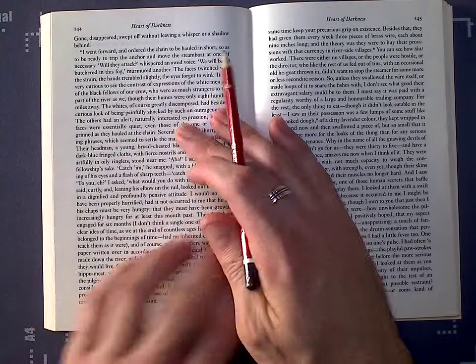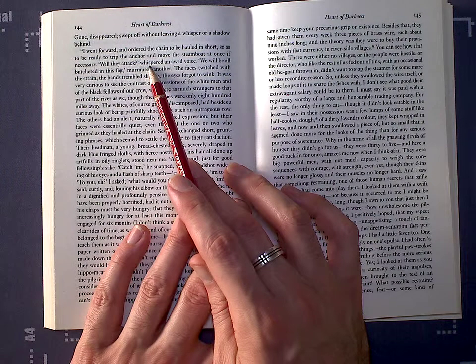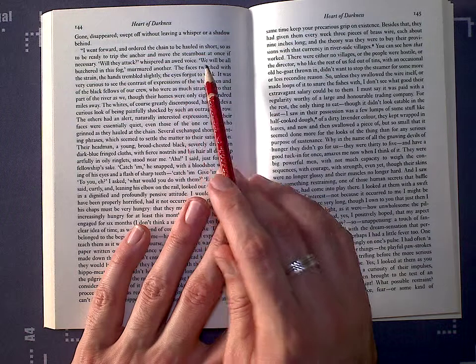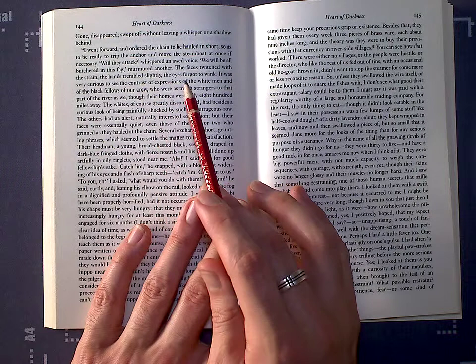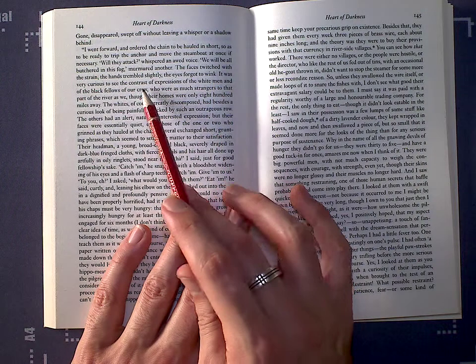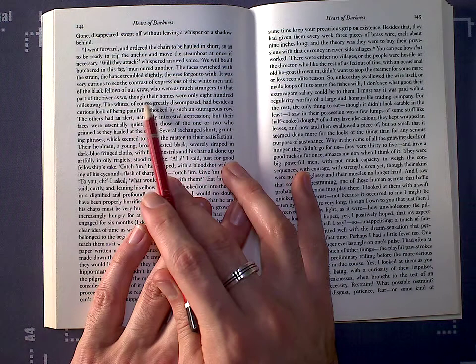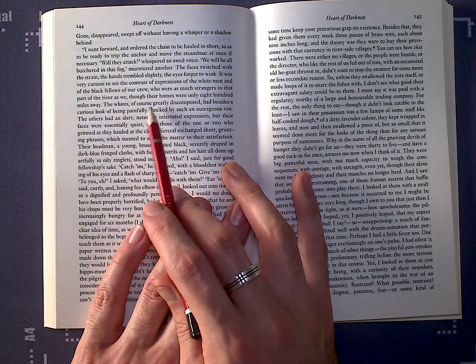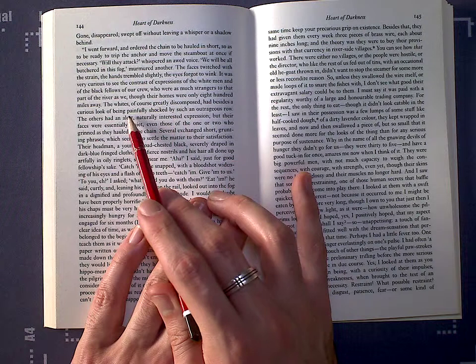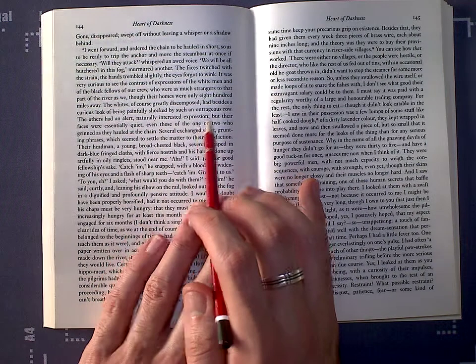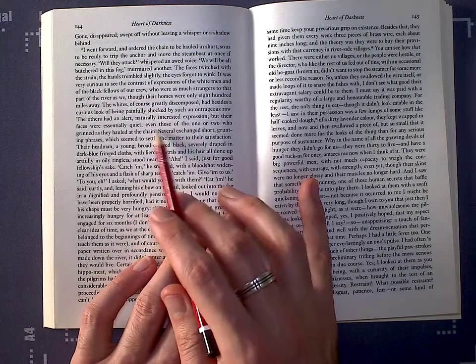I went forward and ordered the chain to be hauled in short so as to be ready to trip the anchor and remove the steamboat at once if necessary. Will they attack? whispered the awed voice. We will be all butchered in this fog, murmured another. The faces twitched with the strain, the hands trembled slightly, the eyes forgot to wink. It was very curious to see the contrast of expressions of the white men and of the blackfellas of our crew, who were as much strangers to that part of the river as we, though their homes were only 800 miles away. The whites, of course, greatly discomposed, had besides a curious look of being painfully shocked by such an outrageous row. The others had an alert, naturally interested expression, but their faces were essentially quiet.